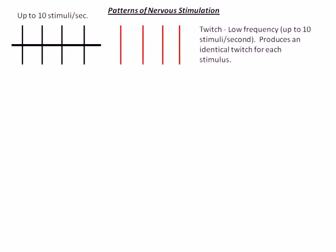One way that the nerve controls the quality of a muscle contraction is by altering the frequency of the signals sent to the sarcolemma. For instance, signals up to 10 stimuli per second result in a muscle contraction known as a twitch. Muscle twitches have identical amplitude and are typically not functional muscle contractions.